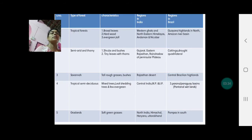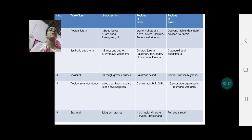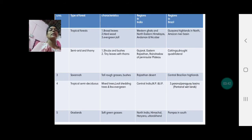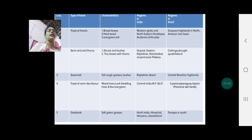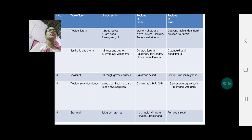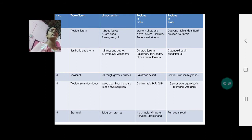Where are these forests found in India and Brazil? Tropical forests in India are found in the Western Ghats, northeastern Himalayas, and Andaman and Nicobar Islands. In Brazil, they are found in the Guiana Highlands in the north and also in the Amazon River Basin.